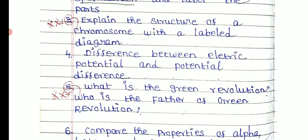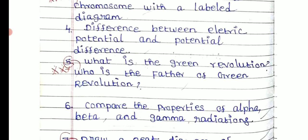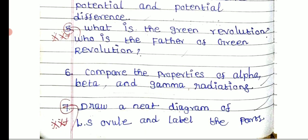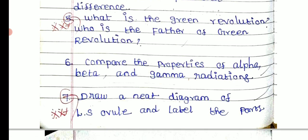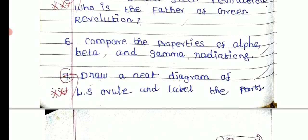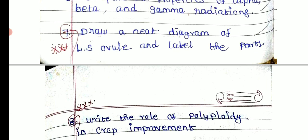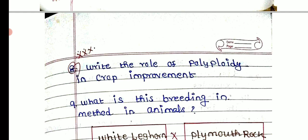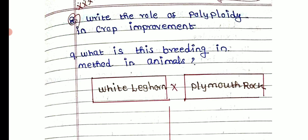What is the Green Revolution? Who is the father of the Green Revolution? Compare the properties of alpha, beta, and gamma radiation. Draw a neat diagram of LS of ovule with typical parts labelled. Write the role of polyploidy in crop improvement. What are the breeding methods of animals?